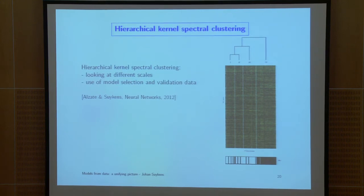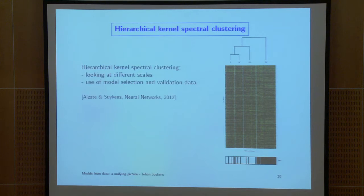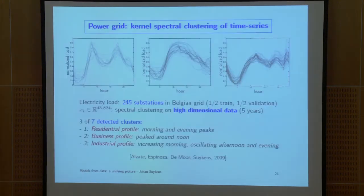Recently we also published a paper in Neural Networks on a hierarchical version of kernel spectral clustering. Hierarchical schemes are popular in bioinformatics applications. Here we look at different scales for which the generalization of the models is stable, and related to that we plot a dendrogram — one that is optimal in the sense of generalization.